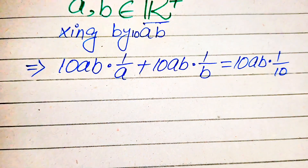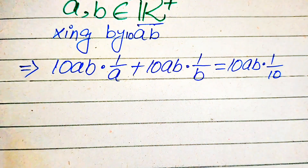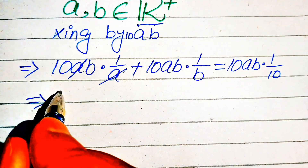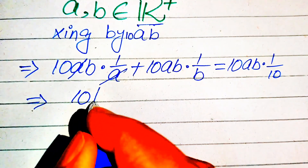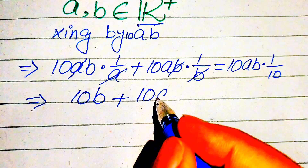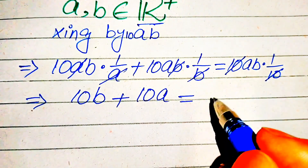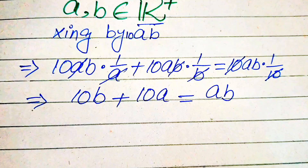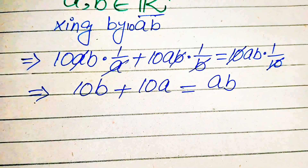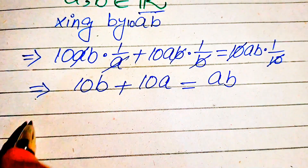In the next step we need some cancellation of terms. The a cancels with this a, and after cancellation we get 10b. Then cancellation of the other terms gives us plus 10a. On the right side, the 10 and 10 cancel and we get ab only. So we have 10b + 10a = ab.